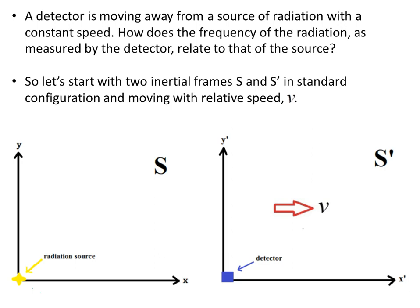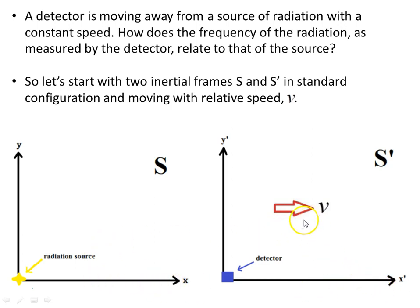Let's start with two inertial frames, S and S', in standard configuration, moving with constant relative speed. In frame S we have the radiation source, and in S', moving along the same common X, X' axis with constant speed V, there is a detector at rest in this frame.